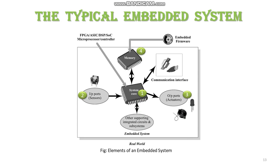Sometimes a system requires temporary memory for performing arithmetic operations or control algorithm execution. Random access memory, i.e. RAM, is used in most of the systems. Various types of RAM include SRAM, DRAM, and NVRAM.